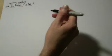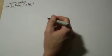So this is part two of limiting factors in the Calvin cycle, and this will concentrate really on temperature.